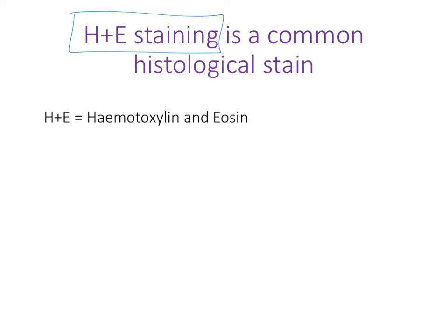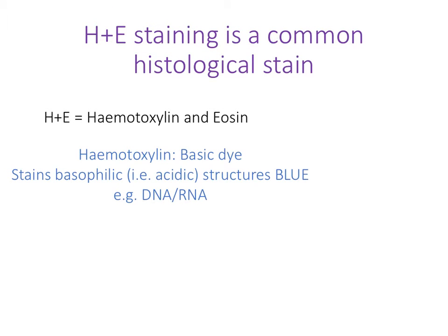H&E stands for hematoxylin and eosin, and this is a very commonly used stain in histology. There are actually two dyes in that stain. First of all there's hematoxylin, which is a basic dye — so it itself is basic — meaning that acidic things in the cell are attracted to it. Things like DNA and RNA are acids in the cell, so they will bind to the hematoxylin molecule.